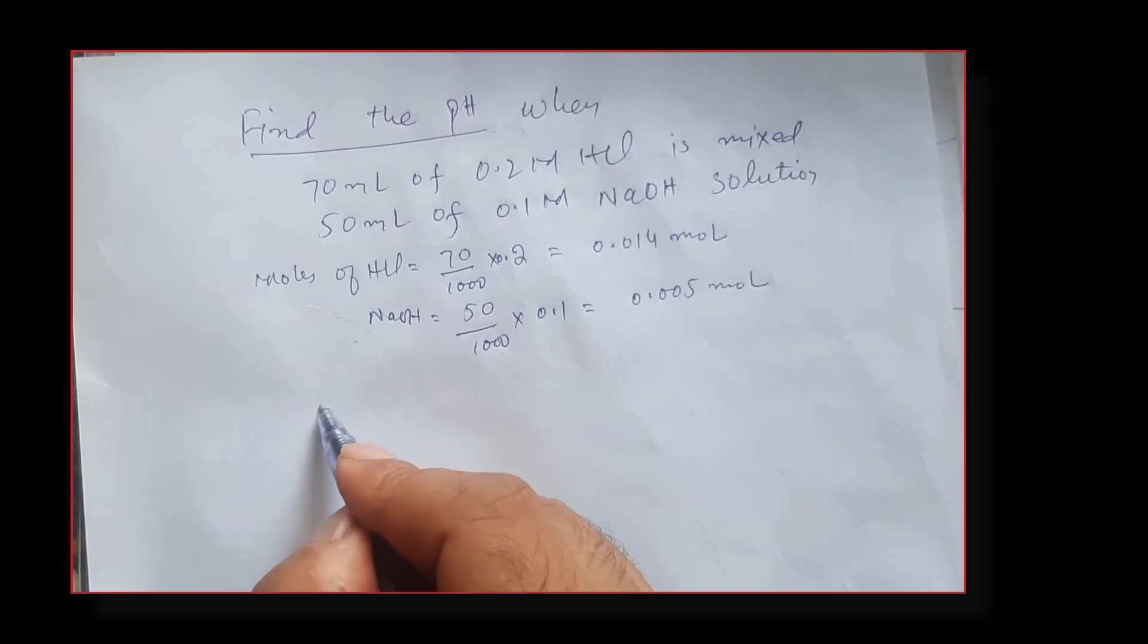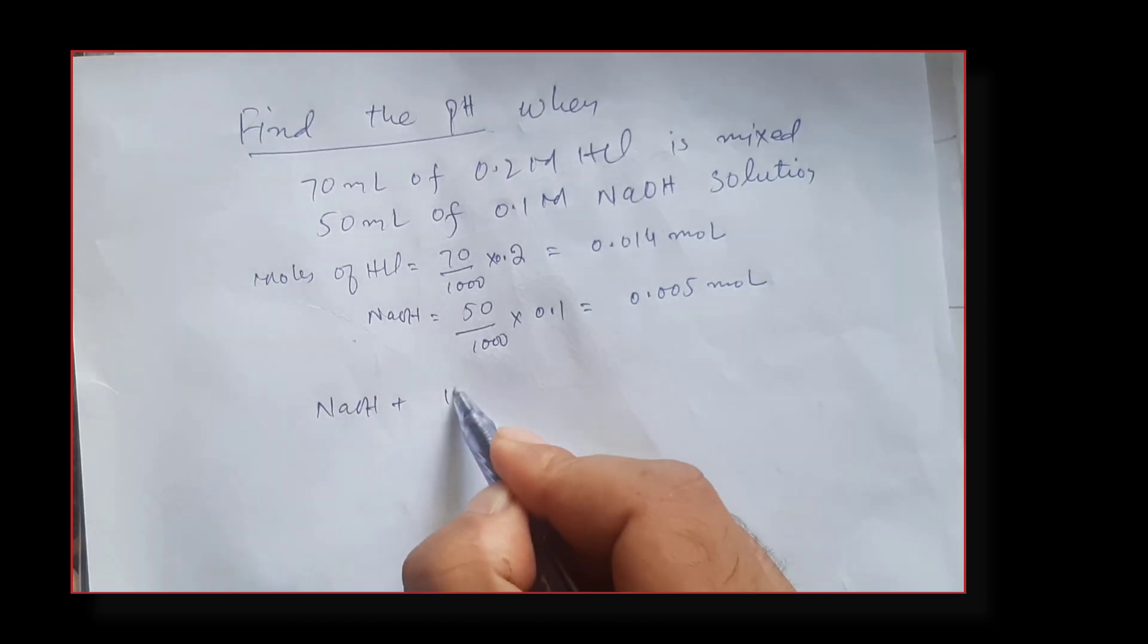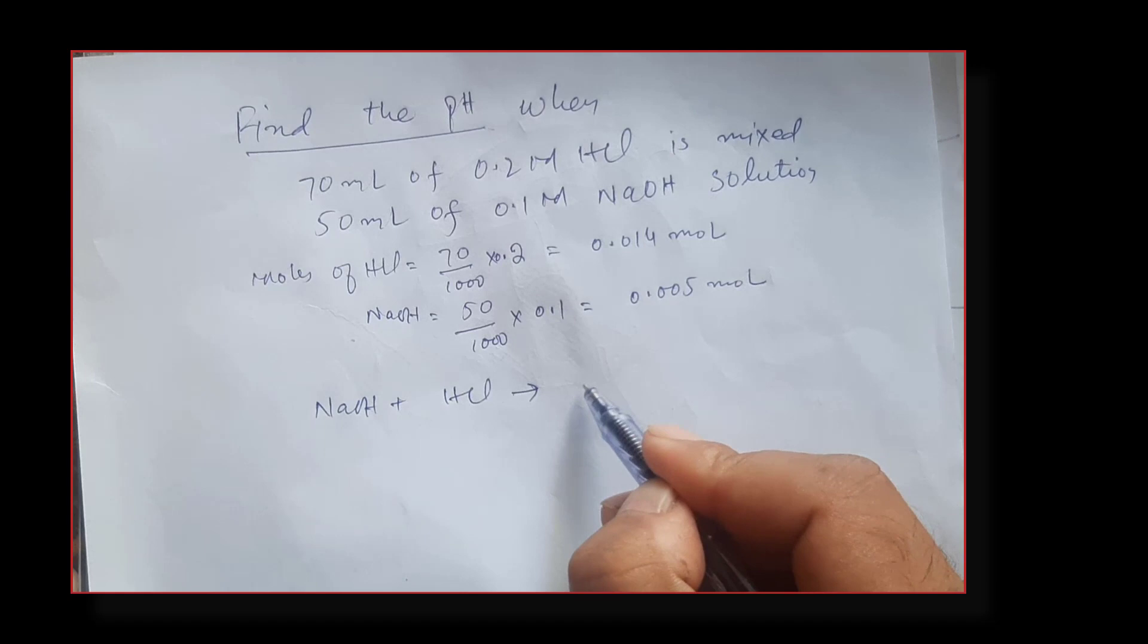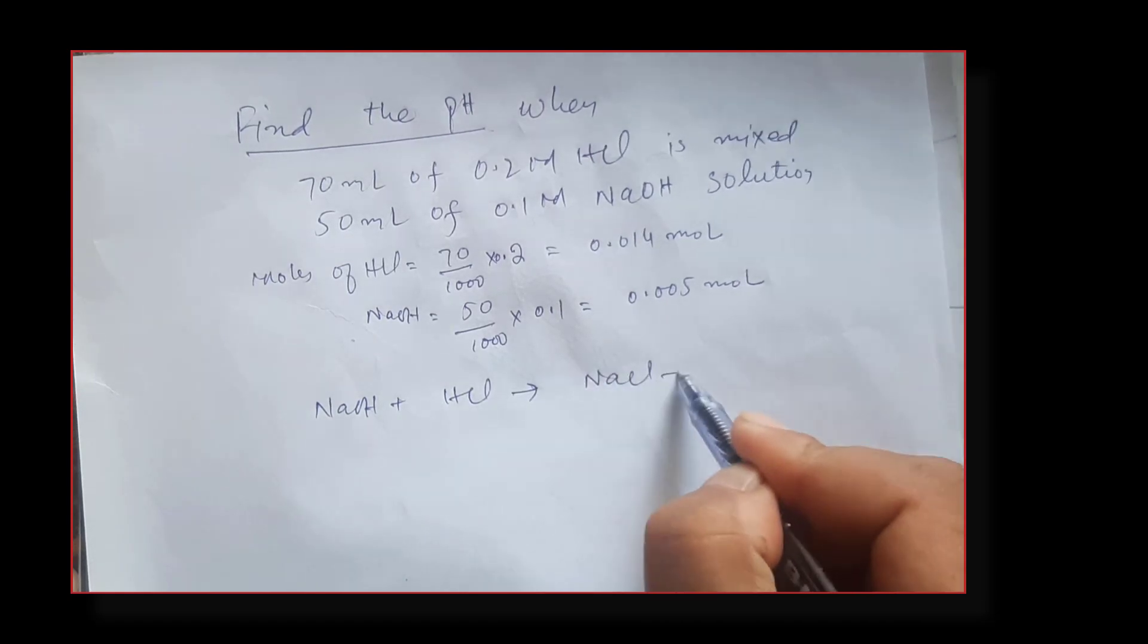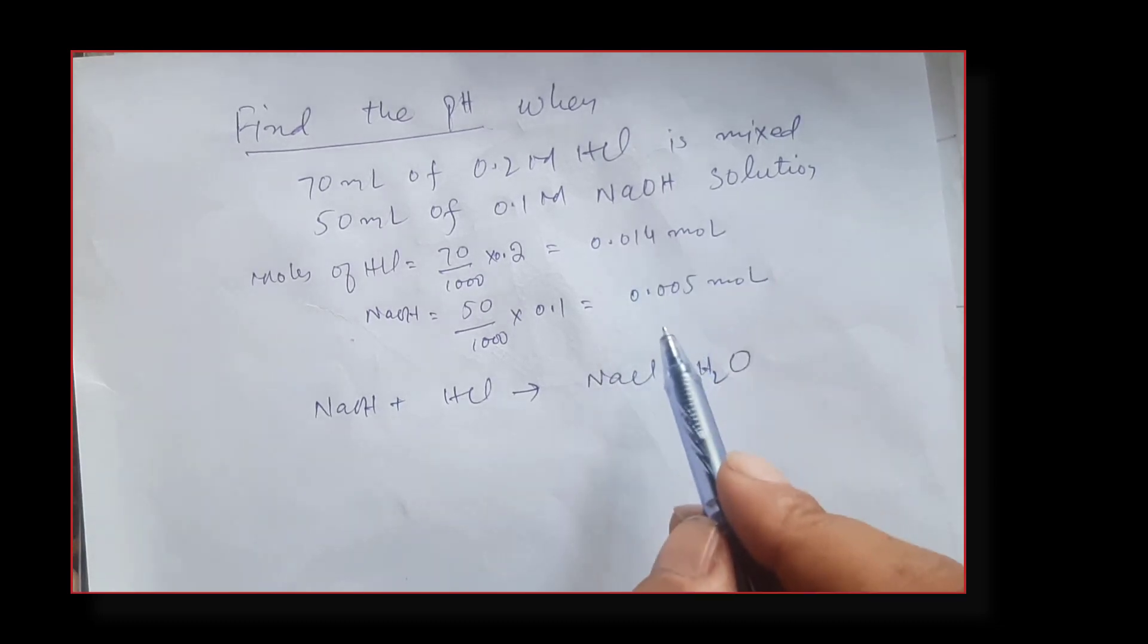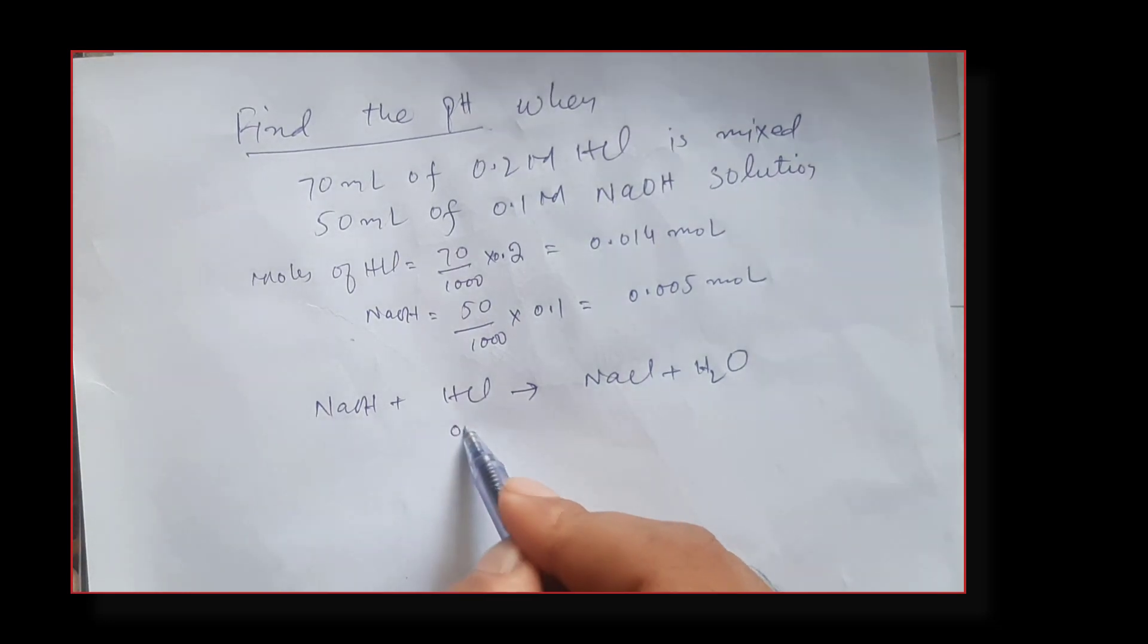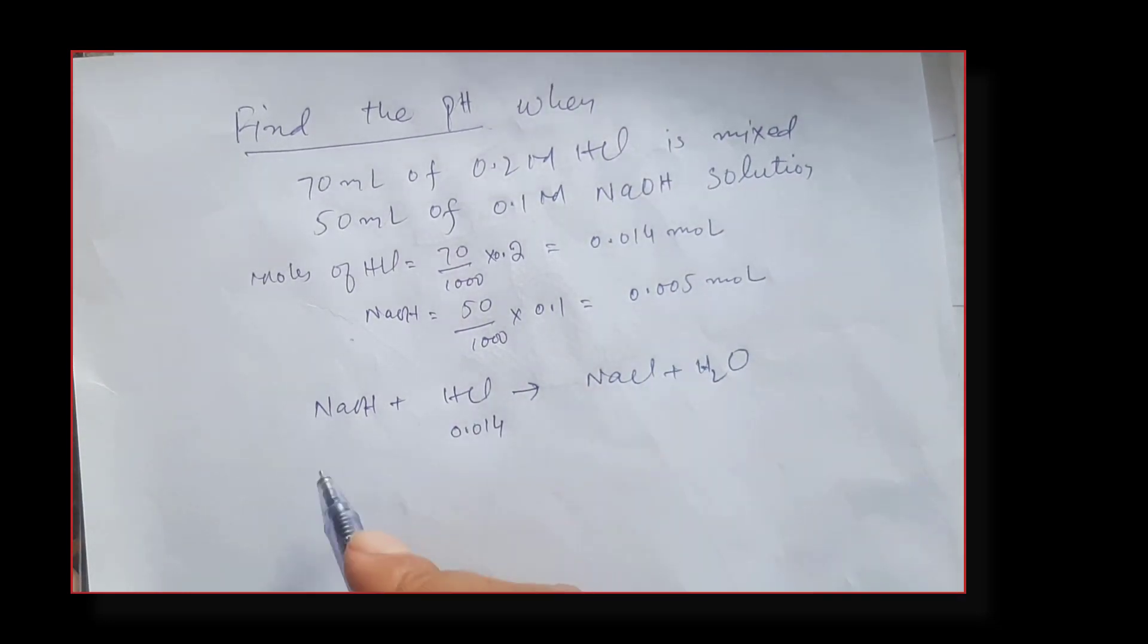Let's write the balanced chemical equation. Sodium hydroxide reacts with HCl to give us NaCl plus H2O. This is a balanced chemical equation, meaning sodium hydroxide and HCl react in a one to one ratio. Let me write the number of moles underneath their formulas: HCl is 0.014 and sodium hydroxide is 0.005.